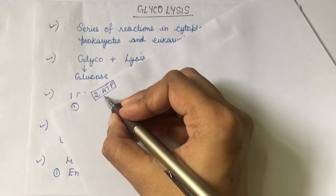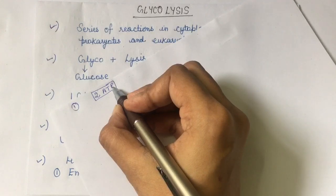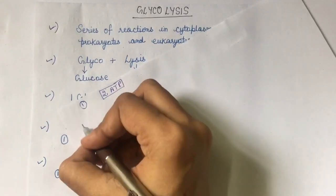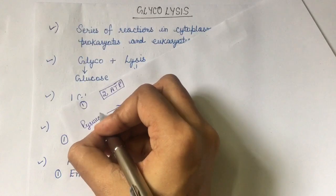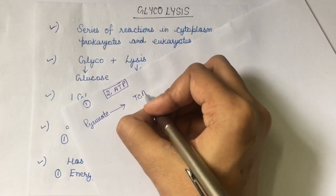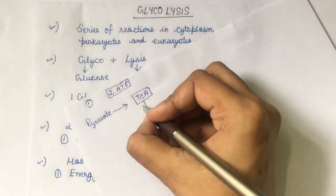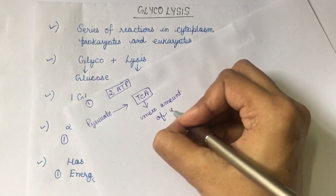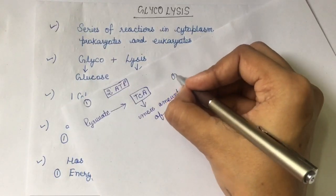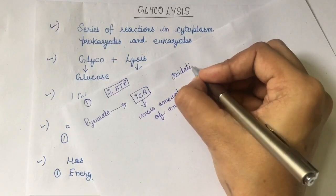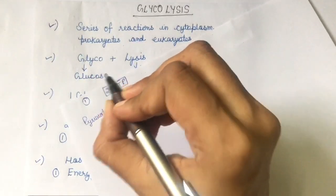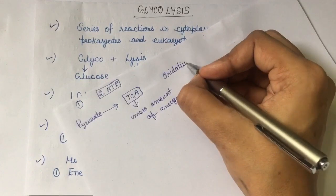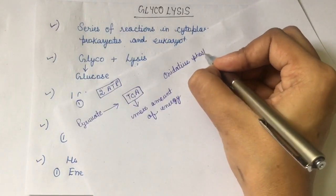When one glucose molecule is broken down, only two ATPs are produced. But the pyruvate that is formed further enters into the TCA cycle. Pyruvate is the end product of glycolysis, and this pyruvate enters into the TCA cycle where more energy is produced, and also in oxidative phosphorylation. So glycolysis produces only two ATP per glucose, but it feeds substrates into the TCA cycle and oxidative phosphorylation where most of the ATP is made.